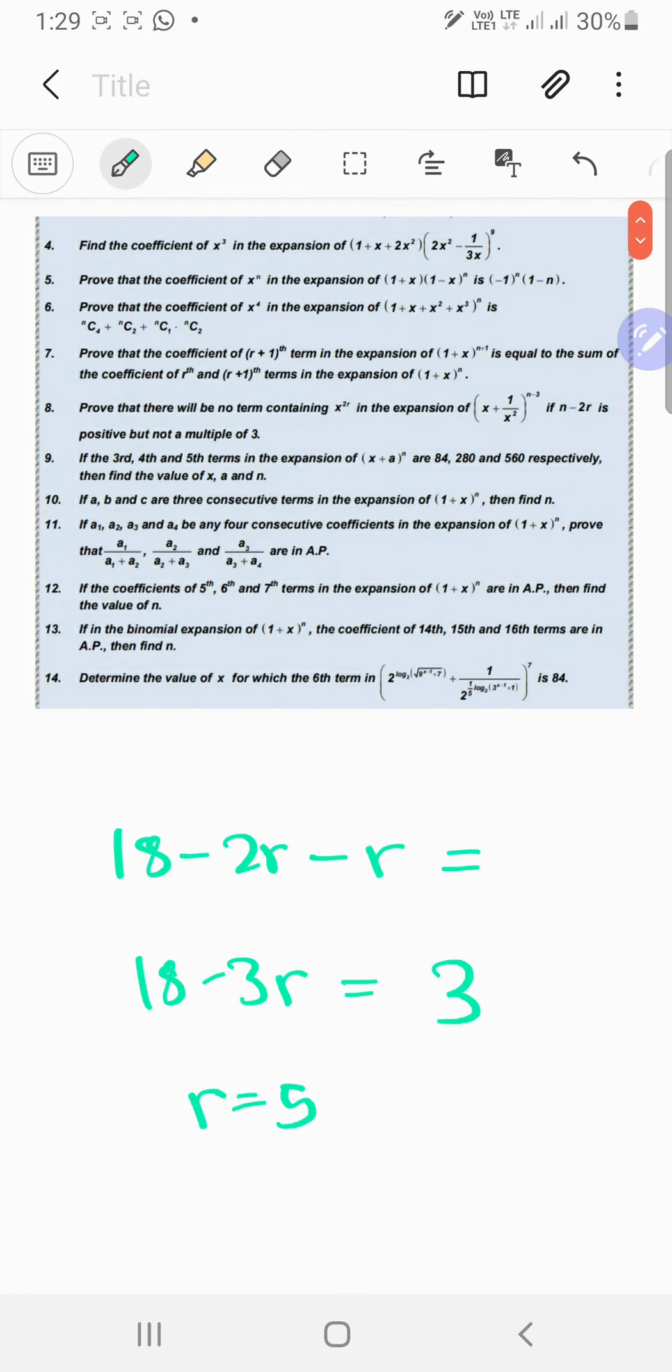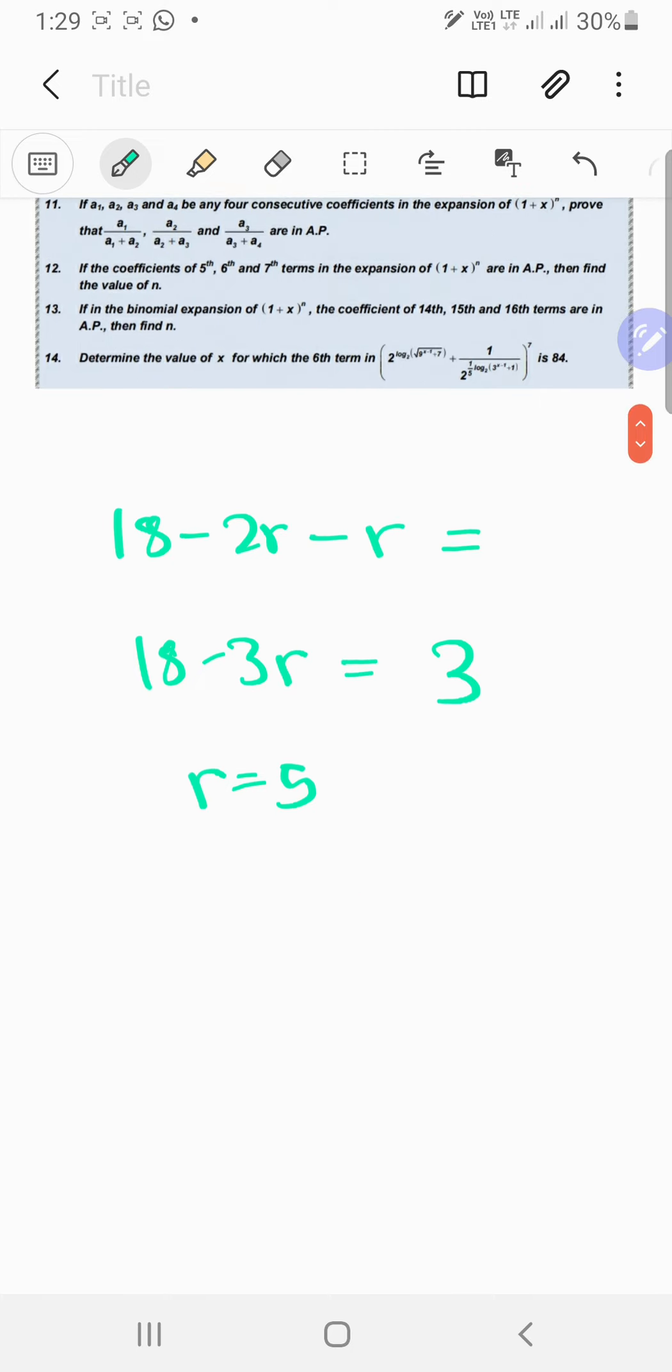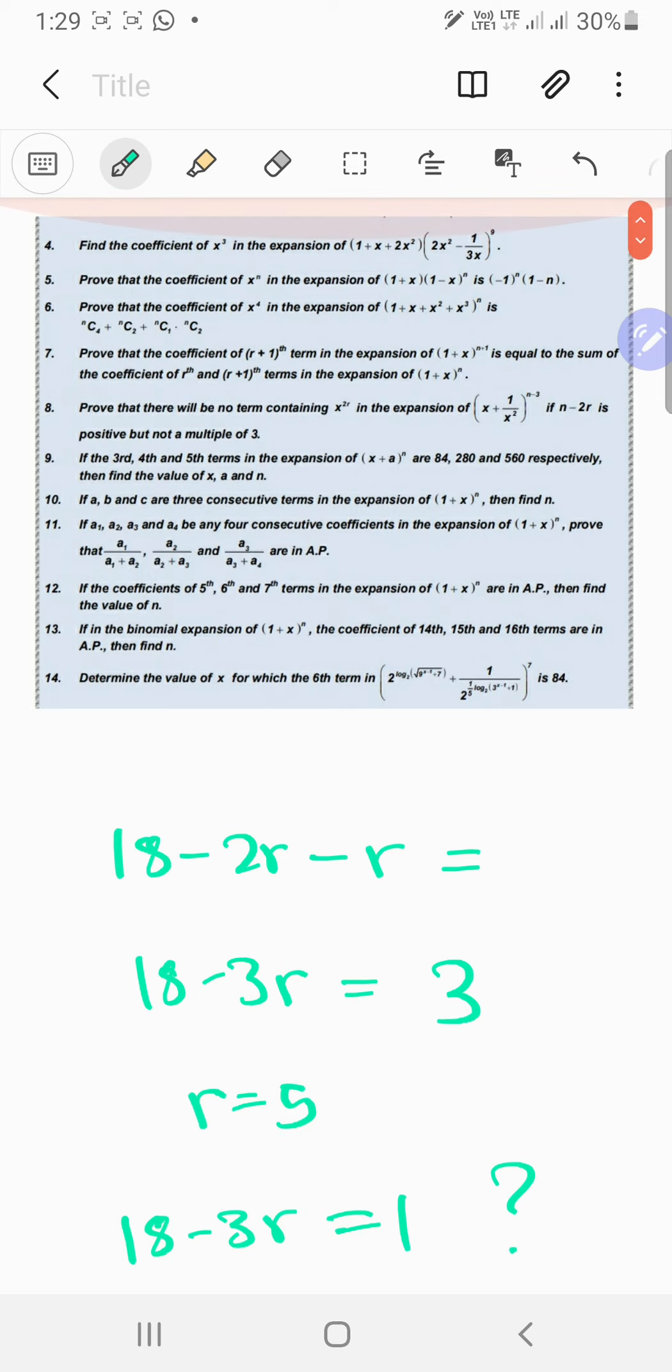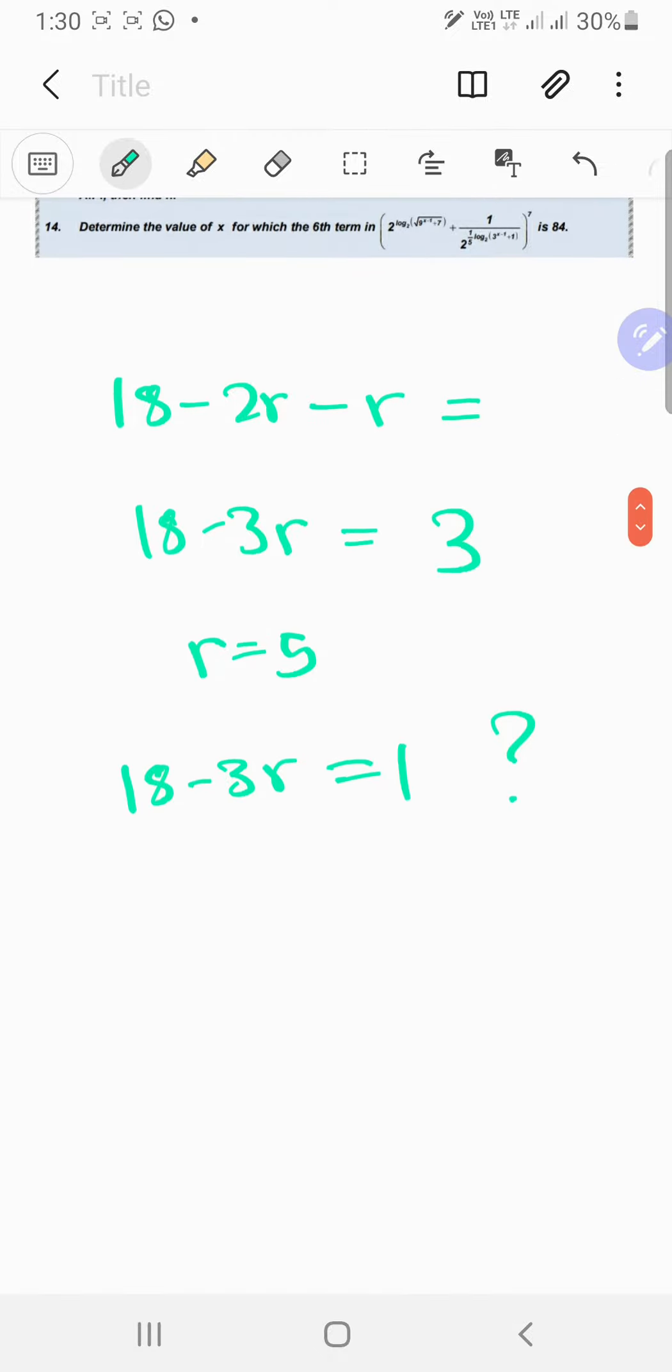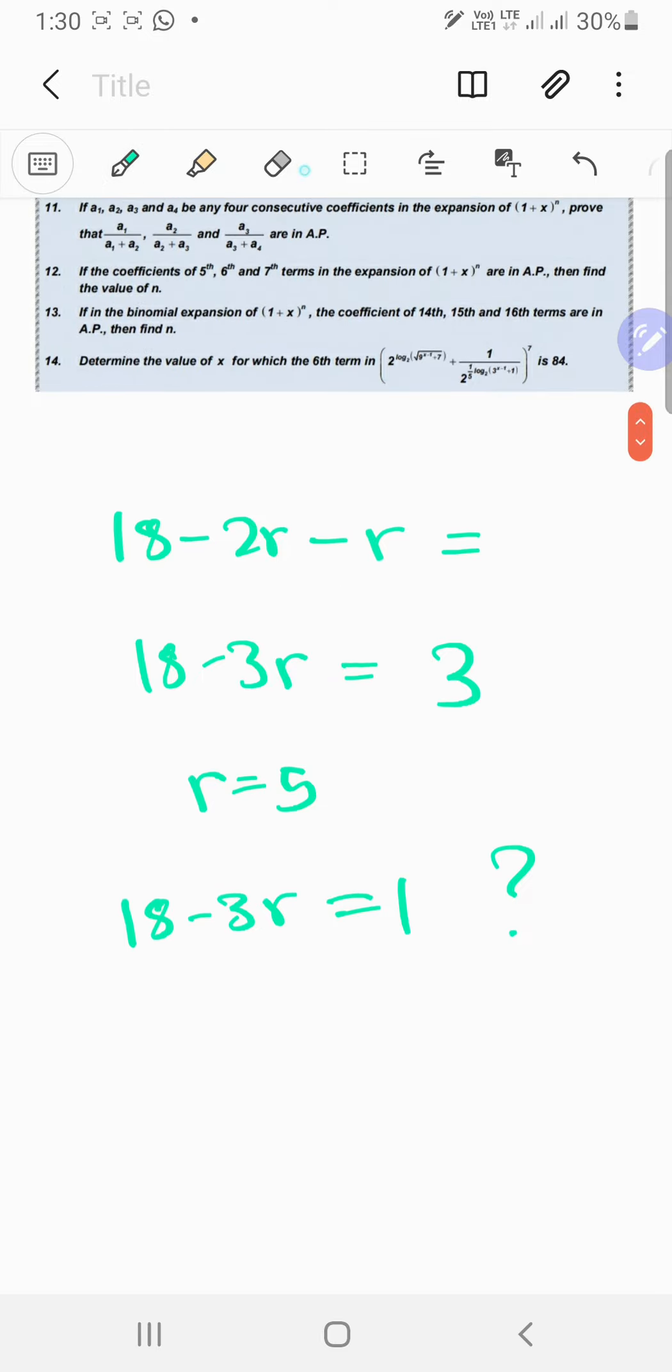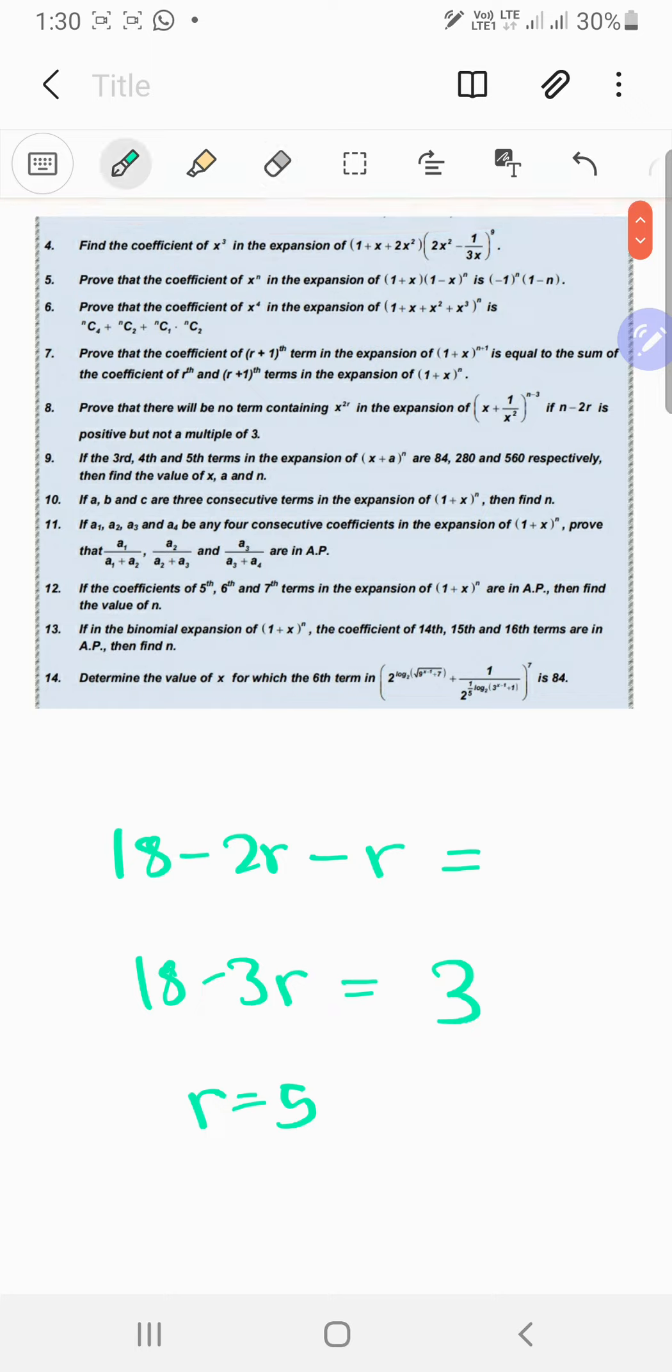So move on, and then you want 2x squared, so 18 minus 3r should be equal to 1. I'm not sure where this is going. So I don't think so that's going to work, so we will not get any value for that, because like 17 is obviously not a multiple of 3. So yeah, that's it. You only get x cubed for this 1 over there, you don't get anything for the x and 2x squared.